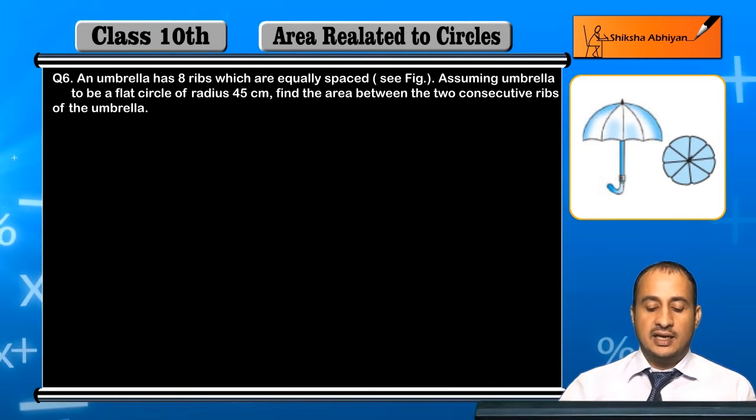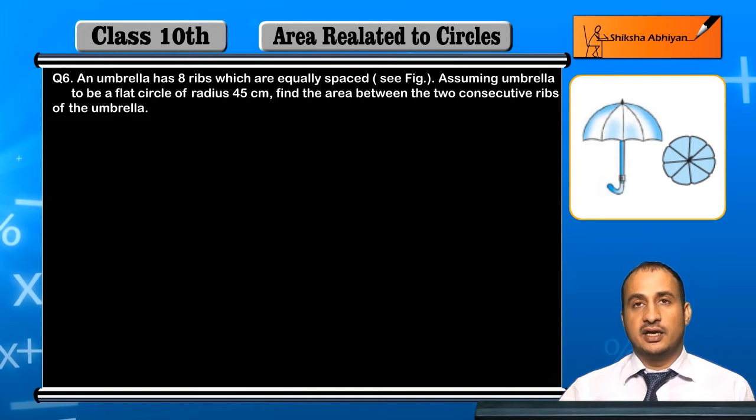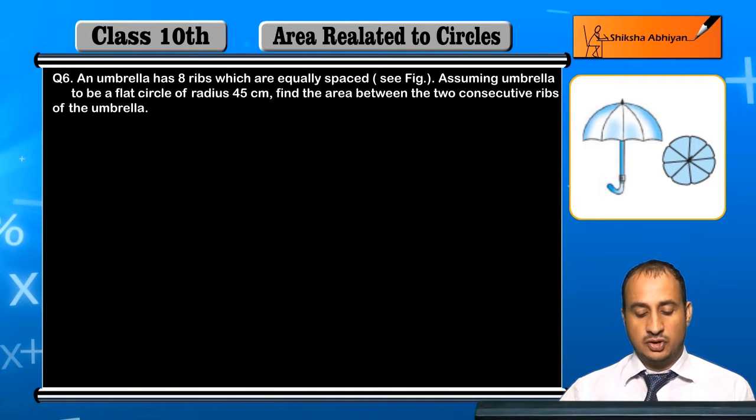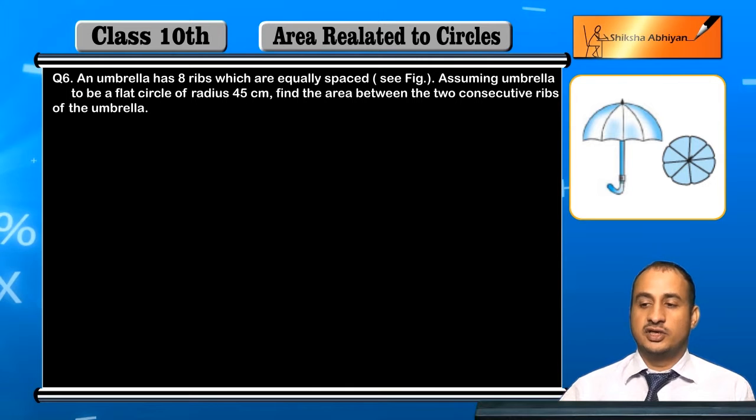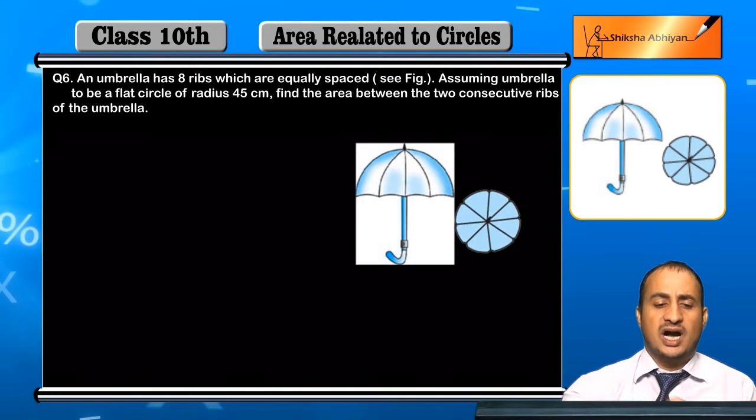There is an umbrella and in the umbrella are 8 ribs. These 8 ribs divide it into different parts, and each rib is 45 cm and it is in a circular shape. So you can see, as we have shown here.